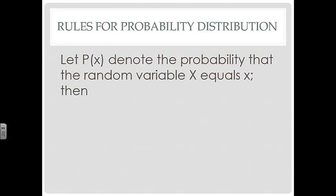Some rules for probability distributions, and these are very similar to the rules that we did when we looked at probability. First, we're going to let P of X denote the probability that the random variable X equals this lowercase x. Then, the sum of all the probabilities has to equal 1. Hopefully you remember that from when we talked about probability. And also, each probability of X has to be between 0 and 1, including 0 and 1. You can't have a negative probability, and you can't have a probability that's greater than 1.